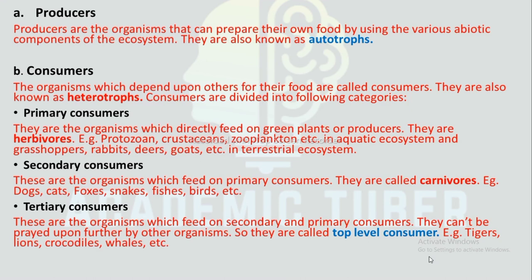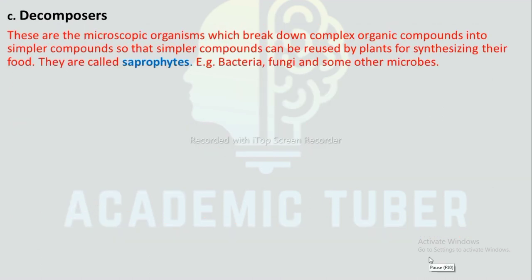Tertiary consumers are organisms which feed on secondary and primary consumers. They cannot be preyed upon further by other organisms, so they are also called top-level consumers — examples include tigers, lions, crocodiles, and whales. Decomposers are microscopic organisms which break down complex organic compounds into simpler compounds so that these simpler compounds can be reused by plants for synthesizing their food. They are called saprophytes — examples include bacteria, fungi, and some other microbes.